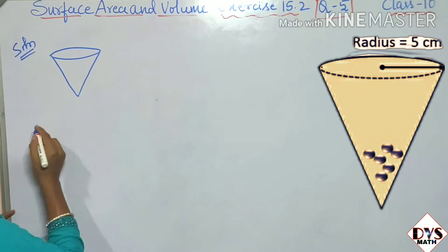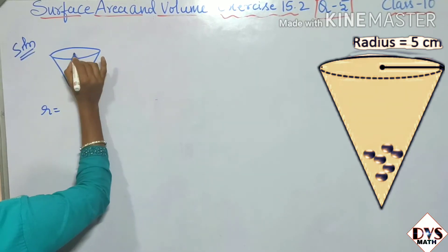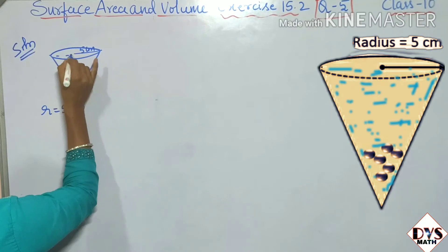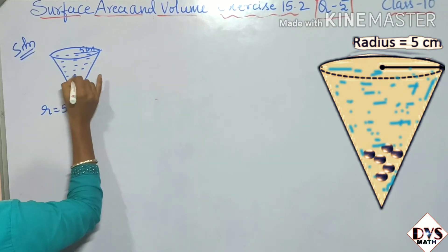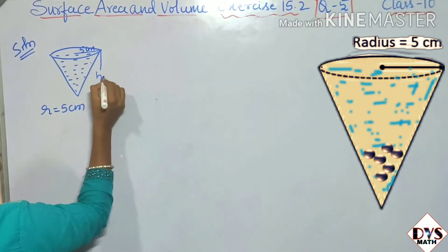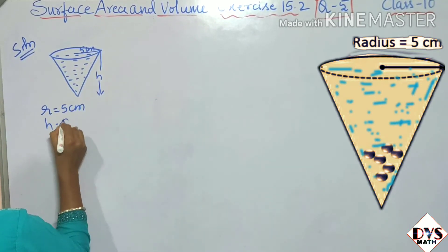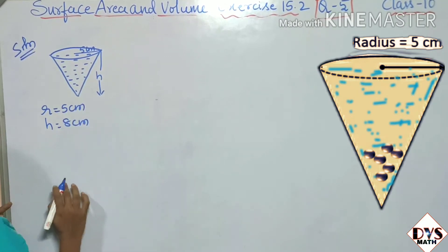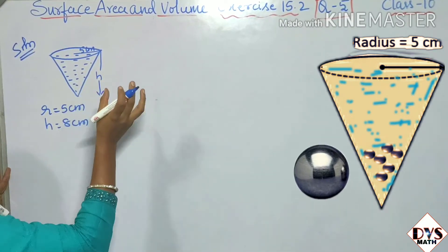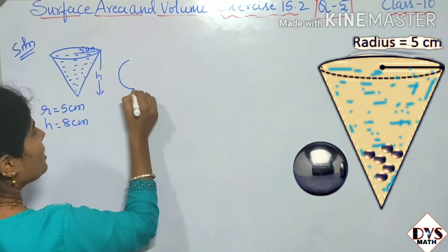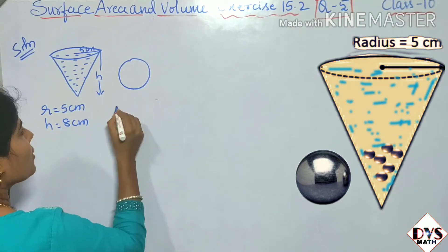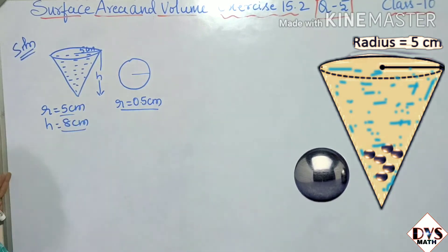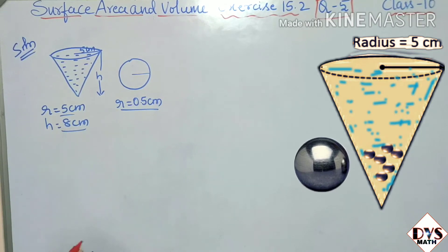Let us draw the figure. For the inverted cone, radius r = 5 cm and height h = 8 cm. It is filled with water. For the lead shots, which are in the shape of a sphere, the radius r = 0.5 cm. These are the given values for the sphere and the inverted cone.